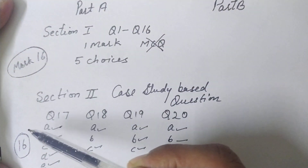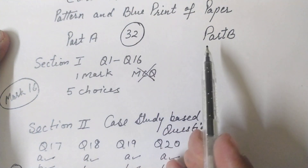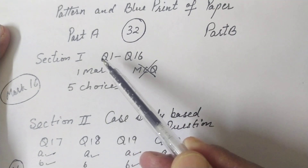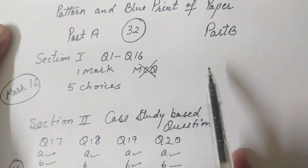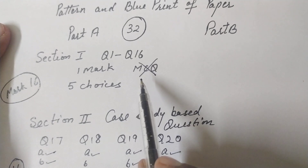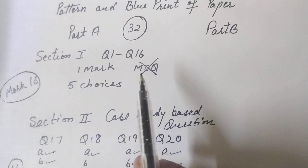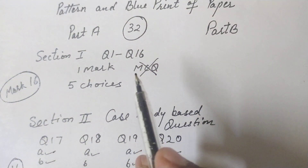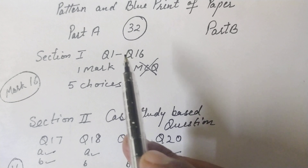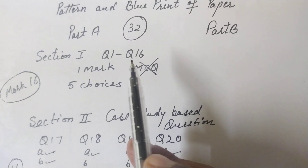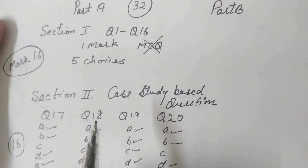So Part A, with Section 1 (16 marks) and Section 2 (16 marks), totals 32 marks. An important tip: in the one-mark questions, always show your solution. If your method is correct but the final answer is wrong, you can get partial credit. Writing only the answer and getting it wrong will earn you zero marks.